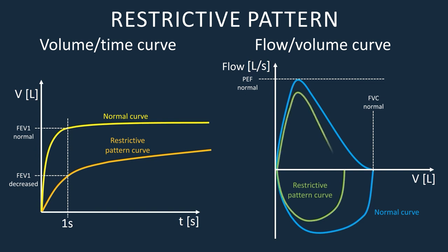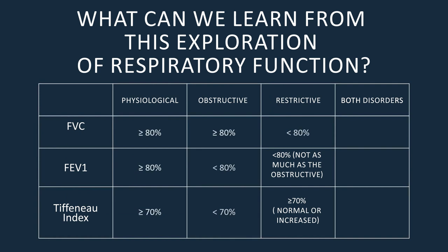If we find a mixed disorder, it may be that all the parameters are decreased. For example, it may occur that a patient with chronic obstructive pulmonary disease had a complication that led to a restrictive disorder and therefore a decrease in vital capacity.